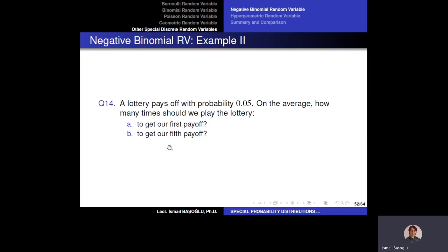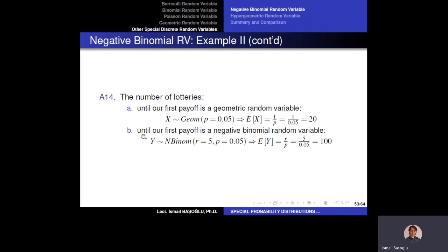Now we continue playing until our fifth payoff — there is a misprint, it should be fifth, not first. The number of lotteries played until the fifth payoff is a negative binomial random variable with r equals 5 and success probability 0.05. The expected value of y is r over p, which equals 5 over 0.05, so on average we need to play 100 lotteries to get our fifth payoff.